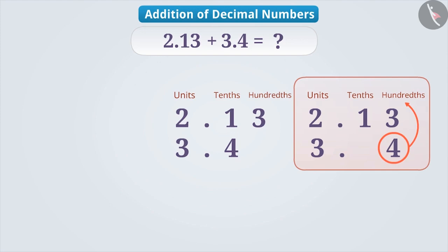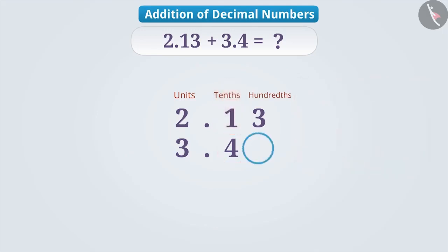To write it in the correct form, we have to write 4 in tenths place only. That means below 1, which is also in the tenths place. Now there is no number in the hundredths place. So, we write 0 here.